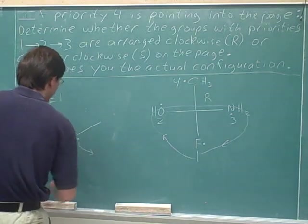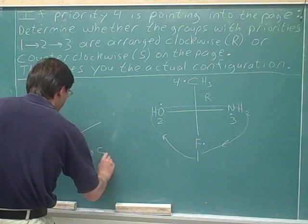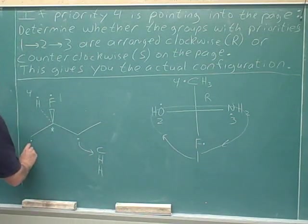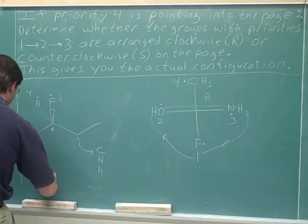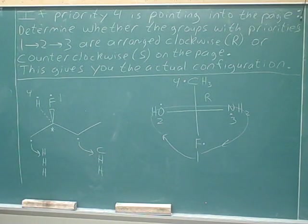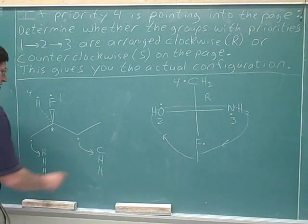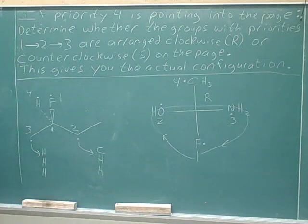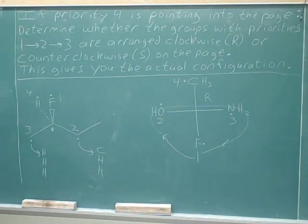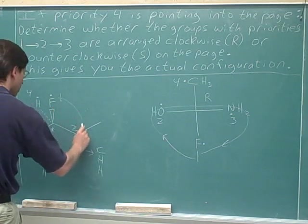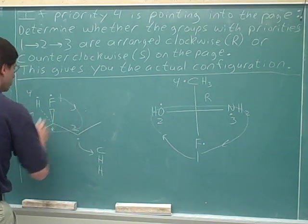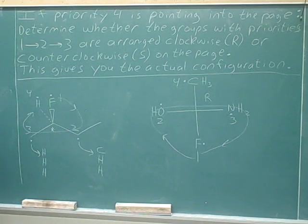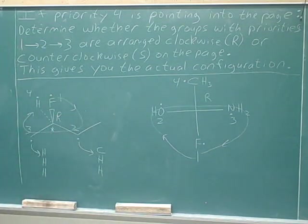The two carbons are tied, so let's make a list of what they're attached to. The ethyl carbon is attached to one carbon and two hidden hydrogens, and the methyl carbon is attached to three hidden hydrogens. The first point of difference is where carbon beats hydrogen, so the ethyl group is number two priority and the methyl group is number three. The number 4 is still pointing away from us, so drawing a circle from 1 to 2 to 3 goes clockwise — this is an R configuration.